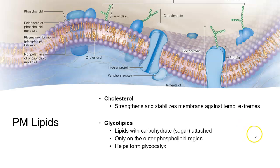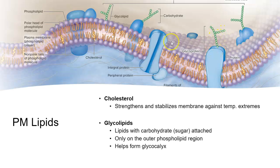In addition to the phospholipids, we also have cholesterol molecules scattered throughout the cell membrane. These cholesterol molecules strengthen the membrane and stabilize it against extreme temperatures. Glycolipids — glyco meaning sugar, lipid meaning fat — are lipids with a carbohydrate or sugar attached. These extend only toward the outer part of the cell membrane, exposed to the extracellular fluid, the interstitial fluid. They're like little antennas. This is a glycoprotein — sugar attached to a protein — and here we have a glycolipid, sugar attached to a lipid.